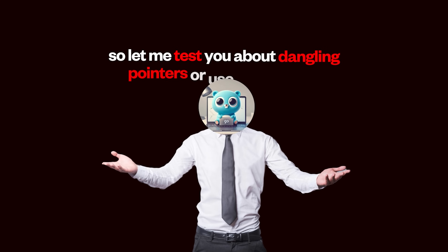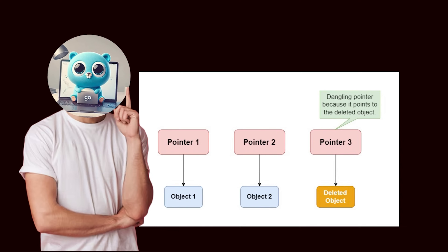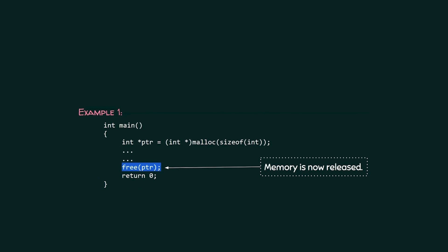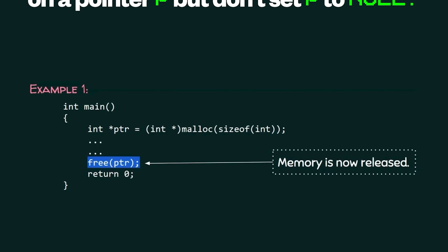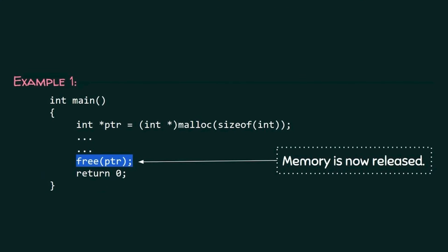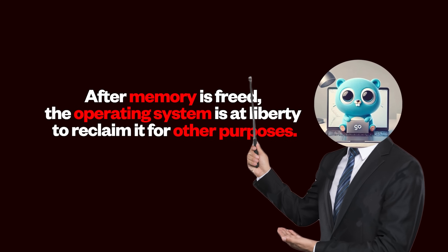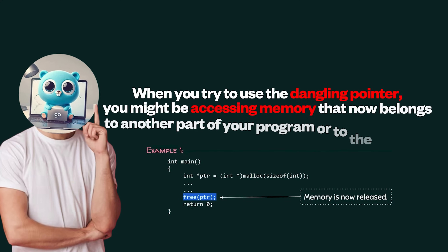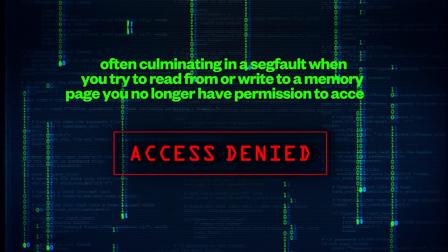Next, let's cover dangling pointers and use-after-free. A dangling pointer is a pointer that continues to point to a memory location that has already been deallocated or freed. The cause is that you call free(p) on a pointer p but don't set p to null, and later your code mistakenly tries to access the memory through p again. After memory is freed, the OS is at liberty to reclaim it for other purposes. When you try to use the dangling pointer, you might be accessing memory that now belongs to another part of the program or to the OS itself, leading to undefined behavior and a segfault when you read from or write to a memory page you no longer have permission to access.